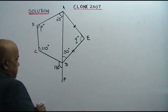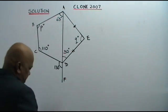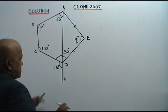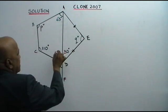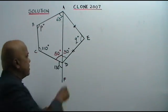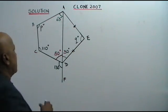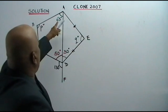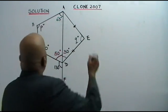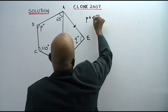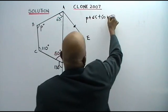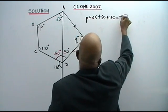We must apply that now. This is a straight line, so this angle equals 180 minus 130, which is 50 degrees. Now, looking carefully: P plus 65 plus 50 plus 110 is equal to 360 — that is the sum of angles of a quadrilateral.